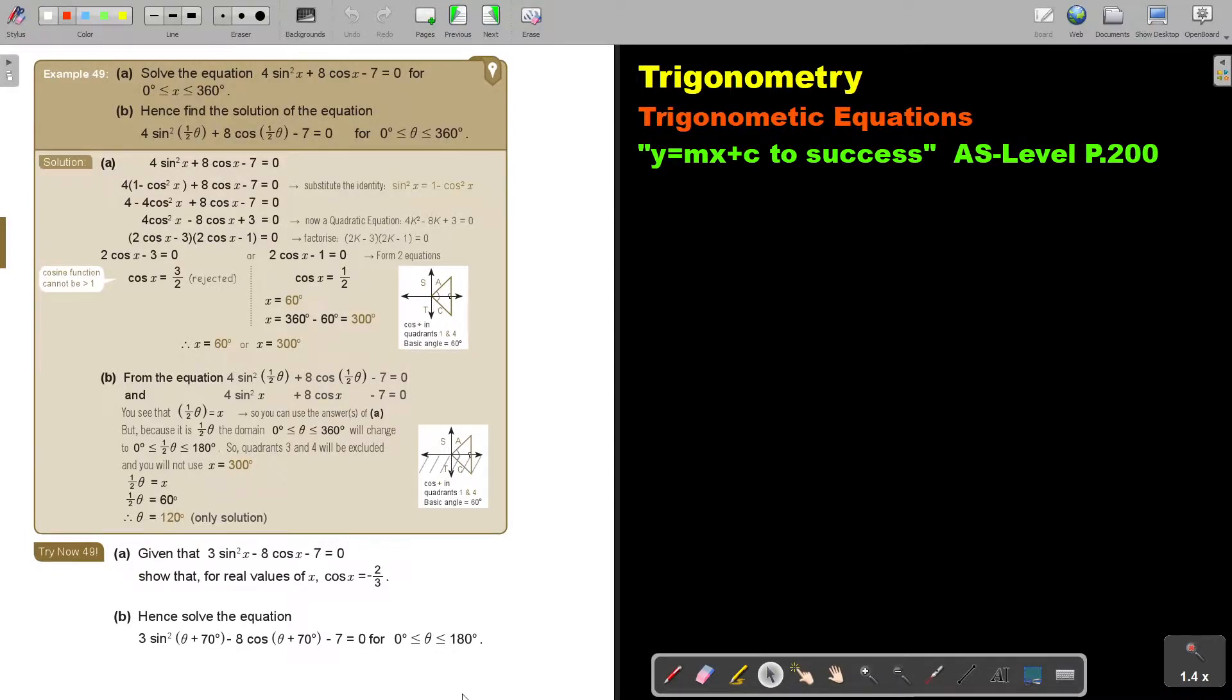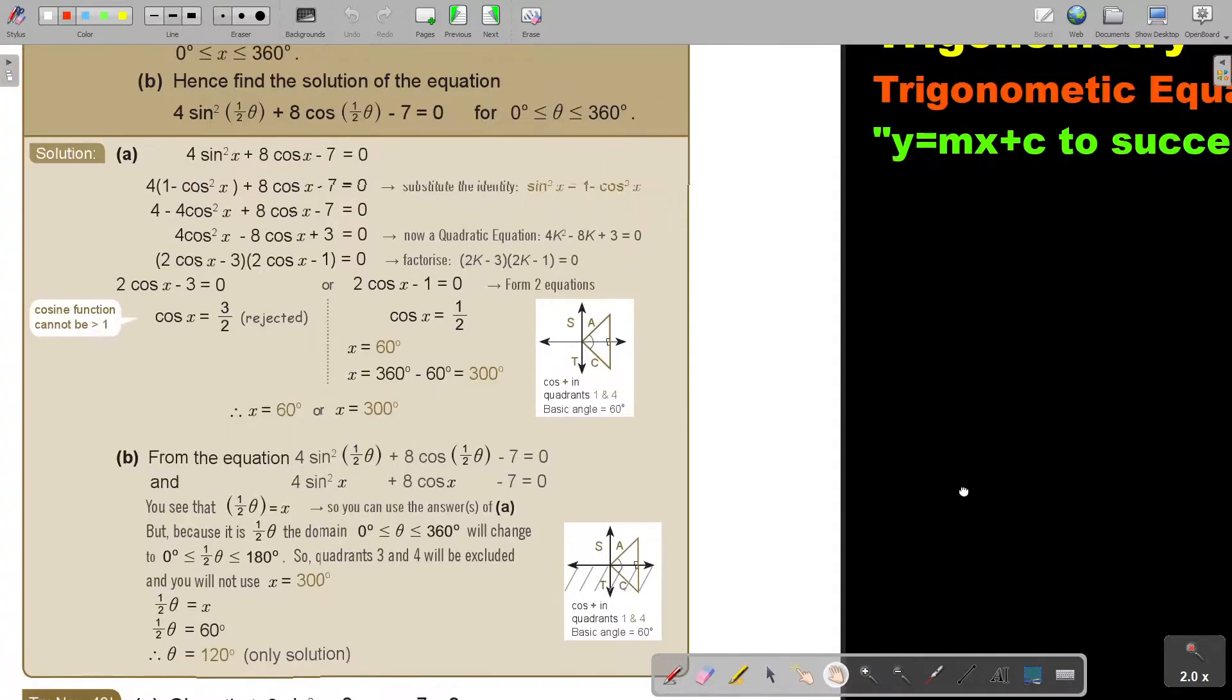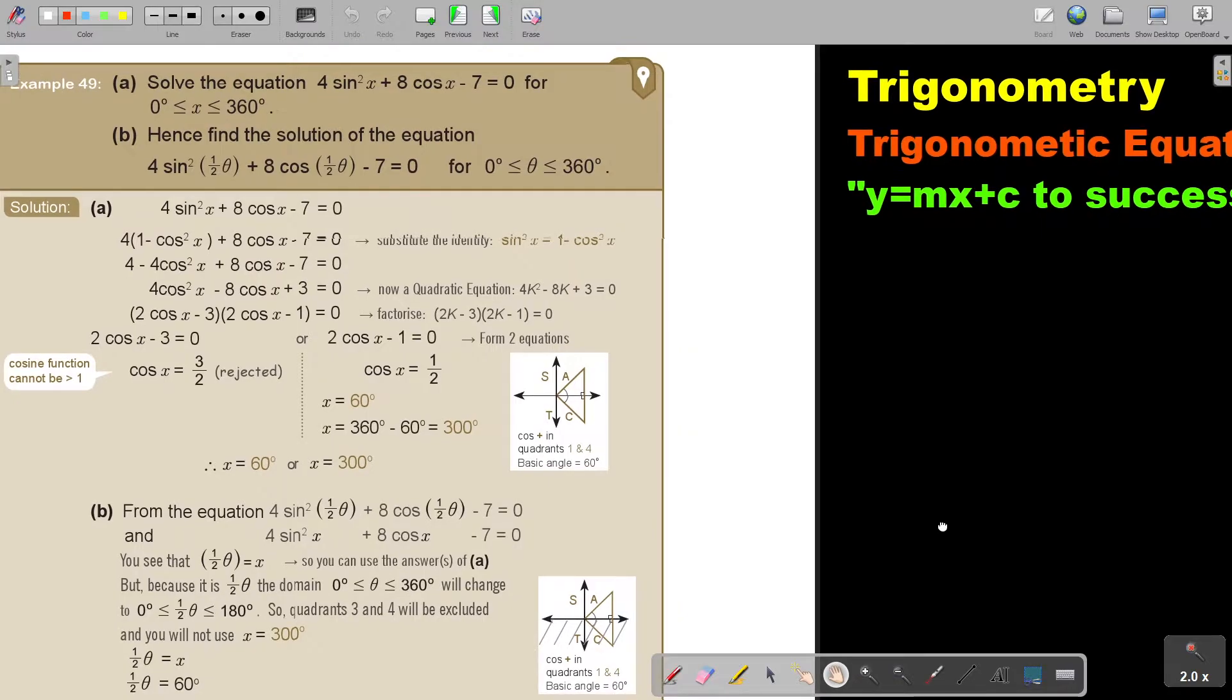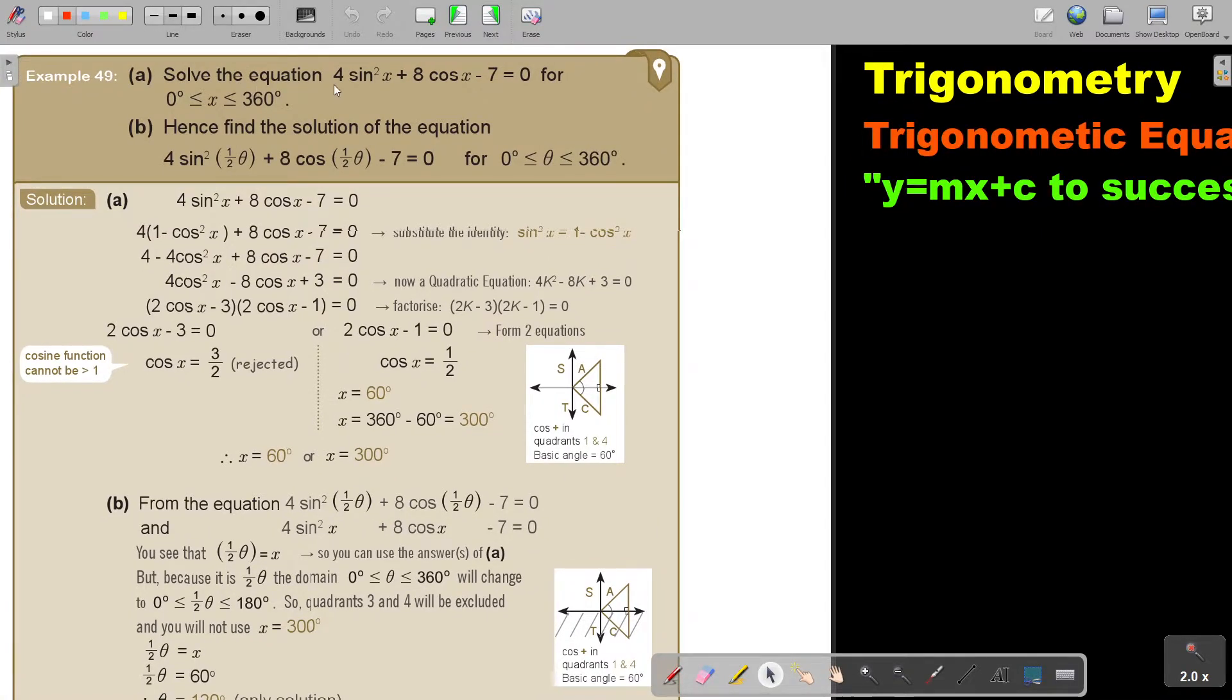In this video, we're going to continue with trigonometric equations. You will find this on page 200 in the Namibia AS level mathematics textbook Y equals MX plus C to success. Let's look at another example. Solve the equation for 0° to 360°. First, make sure your calculator is on degrees.